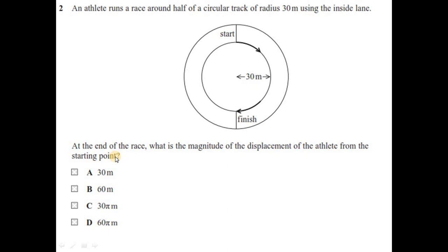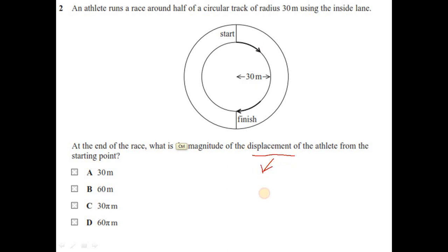Question two: an athlete runs a race around half of a circular track of radius 30 metres using the inside lane. At the end of the race, what is the magnitude of the displacement of the athlete from the starting point? Displacement is the shortest distance between the starting and end point.